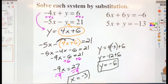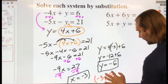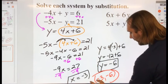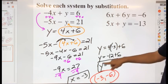So my solution set is negative 3, negative 6. If I were to graph these two lines, I should see an intersection at this point.